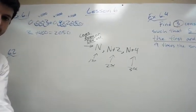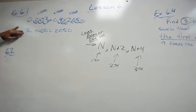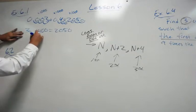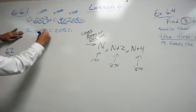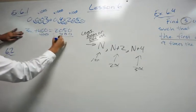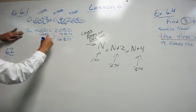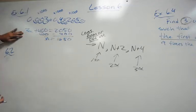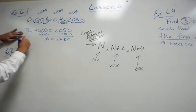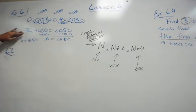So we have 3x plus 400 equals 2050. We solve by subtracting 400 to get 1650 equals 3x, and then dividing by 3 gives x equals 550.